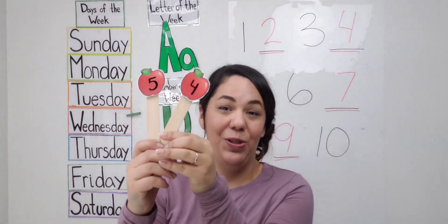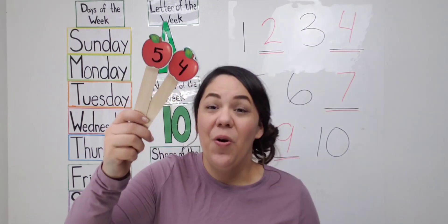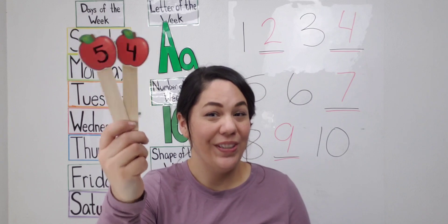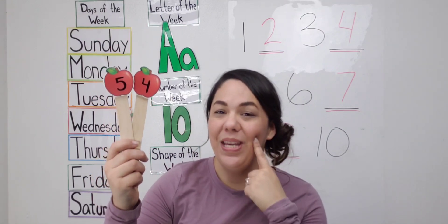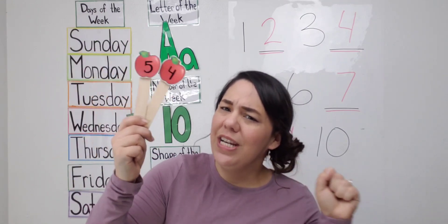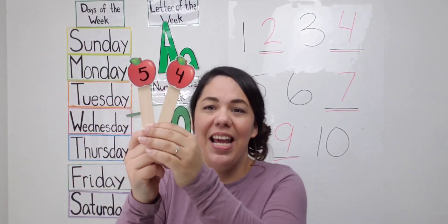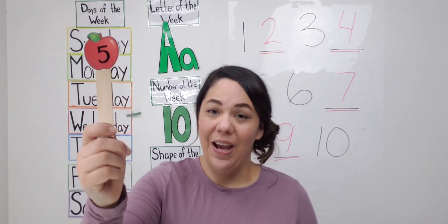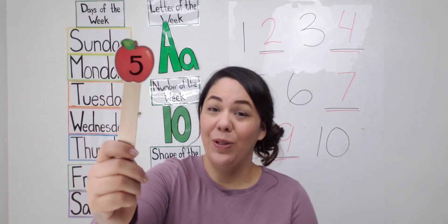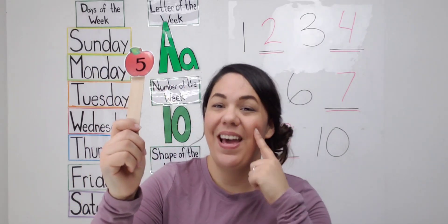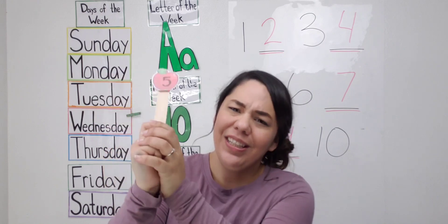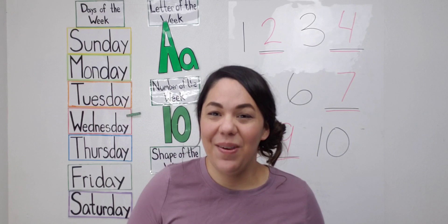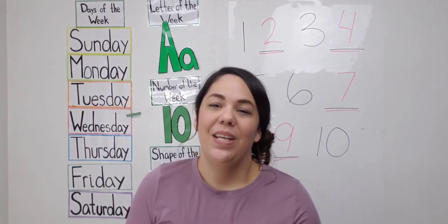Three little apples smiled at me. I shook that tree as hard as I could and down came an apple. Mmm, it was good. We only have one little apple left. One little apple smiled at me. I shook that tree as hard as I could and down came an apple. Mmm, it was good.